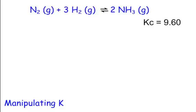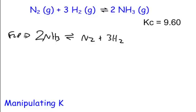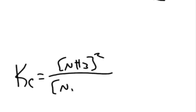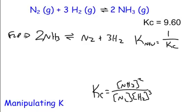Let's talk about manipulating K, the equilibrium constant. There are two different ways we can manipulate it. One is if we flip our reaction — this is a lot like Hess's law. When we flip our reaction, we have 2NH3 going to N2 and 3H2. The new K is going to be 1 over KC — the inverse — because we always put the products on top in the equilibrium expression: NH3 squared over N2 times H2 to the third power. Flipping the reaction inverses that expression, giving us the reciprocal.